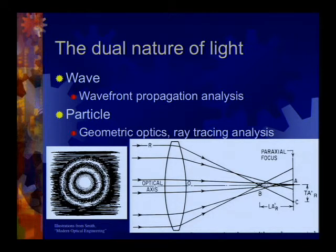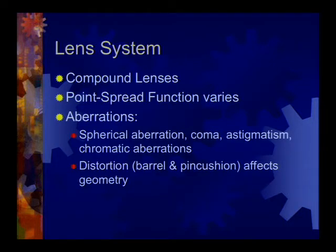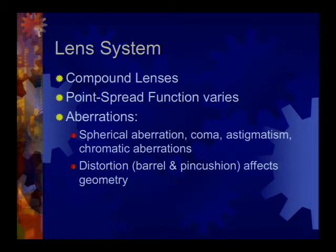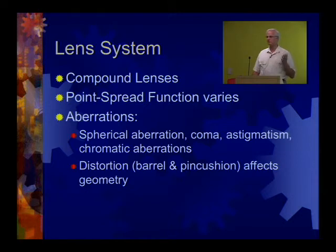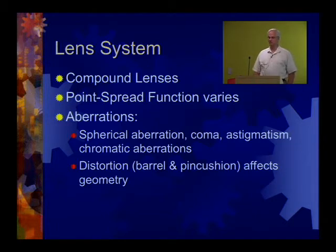Starting with the particle nature analyzed by ray tracing: light comes through compound lenses — maybe 14 or 15 lenses connected in different ways to counteract aberrations. There's a point spread function inherently related to resolution, describing how an infinitesimal point looks after passing through the entire lens system. Types of aberrations include spherical aberration, coma, astigmatism, chromatic aberrations, and distortions like barrel and pincushion.